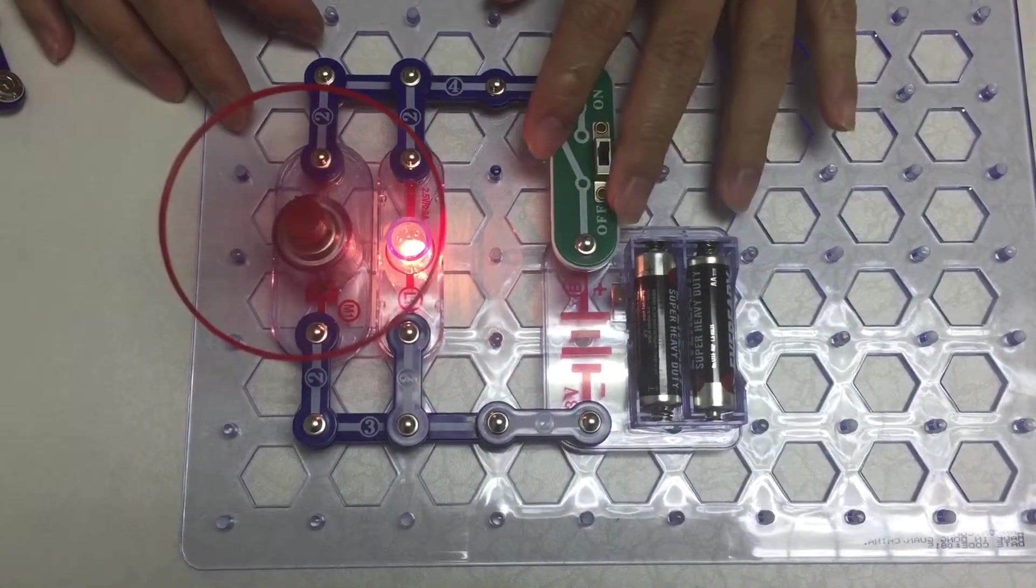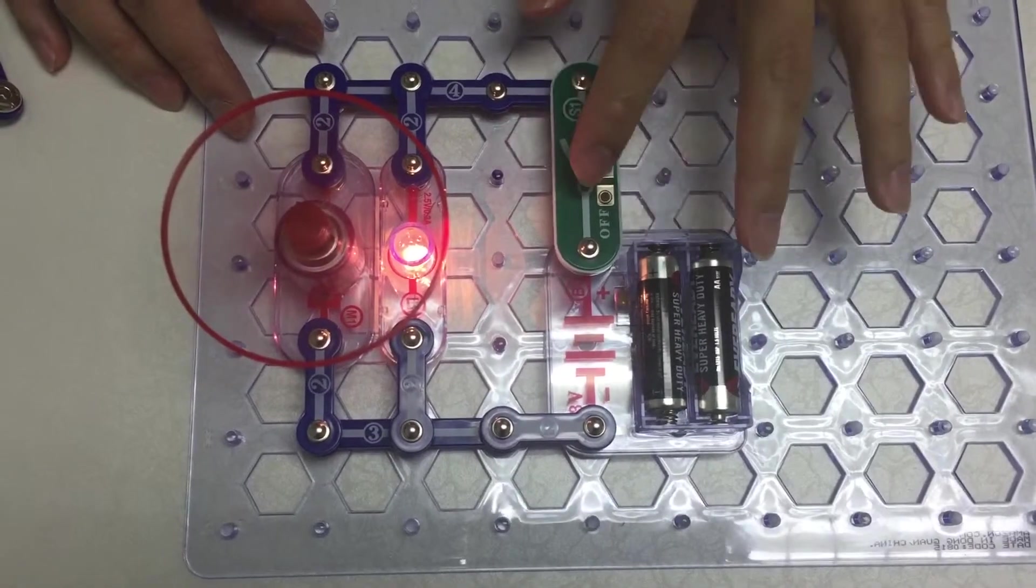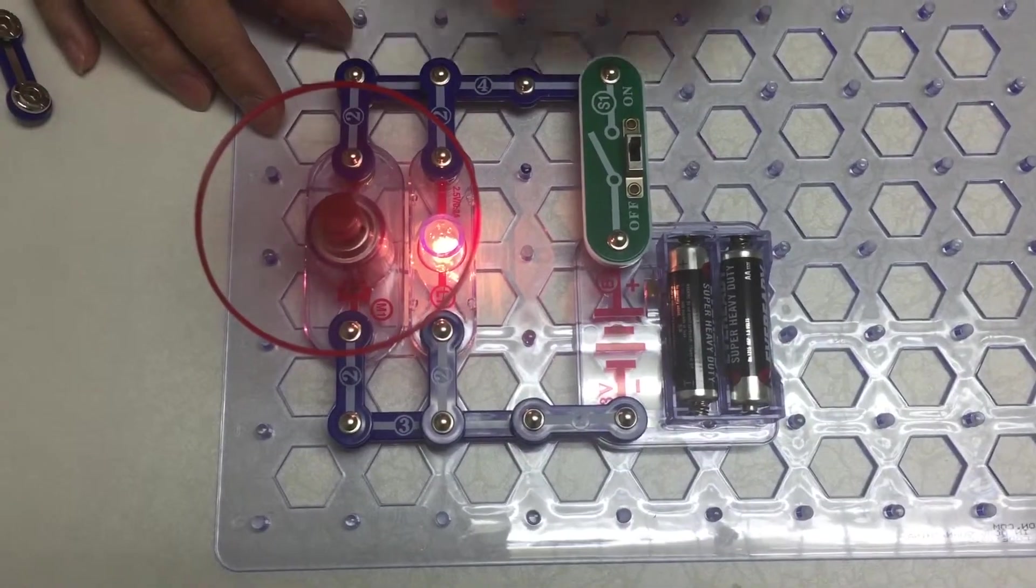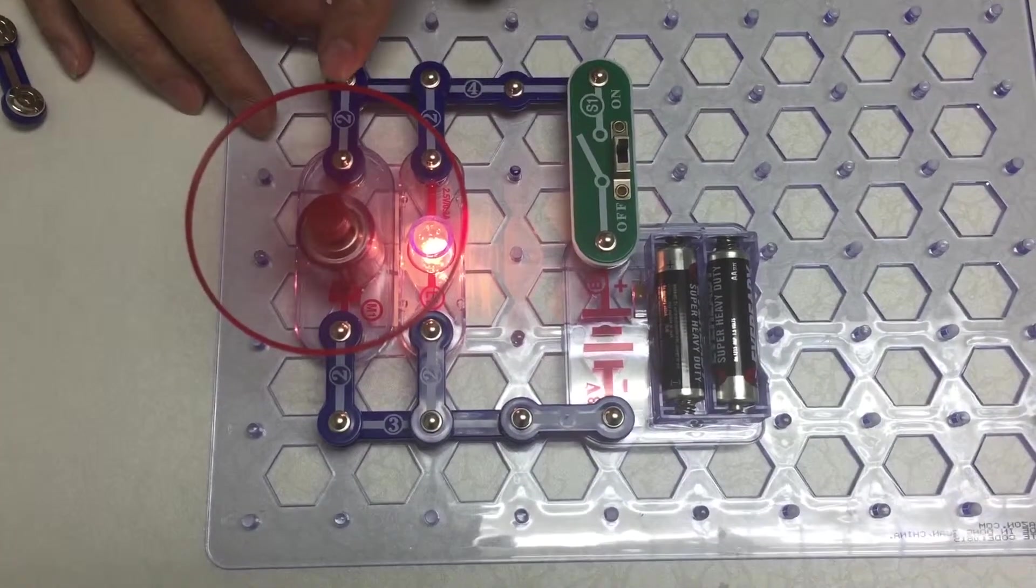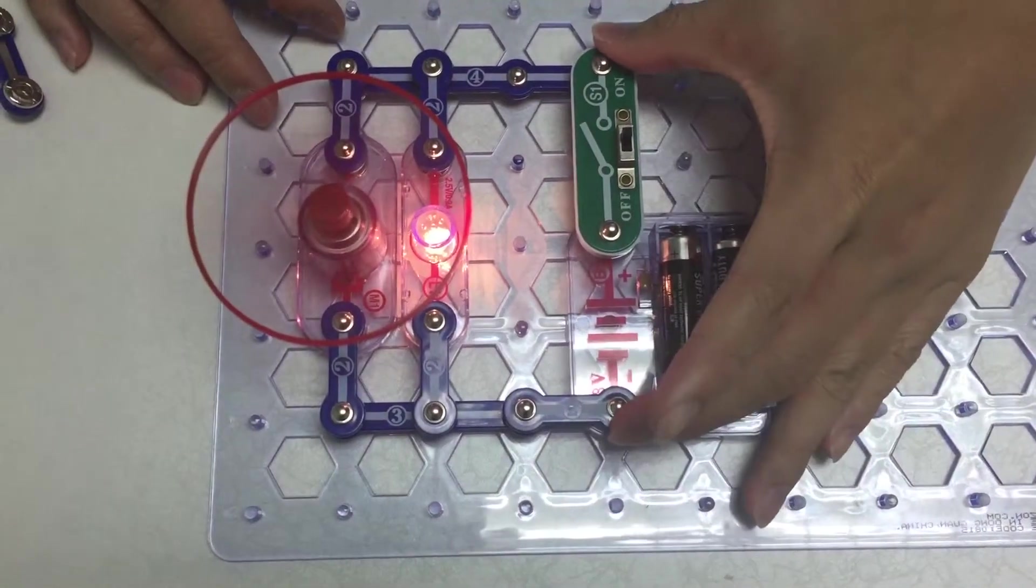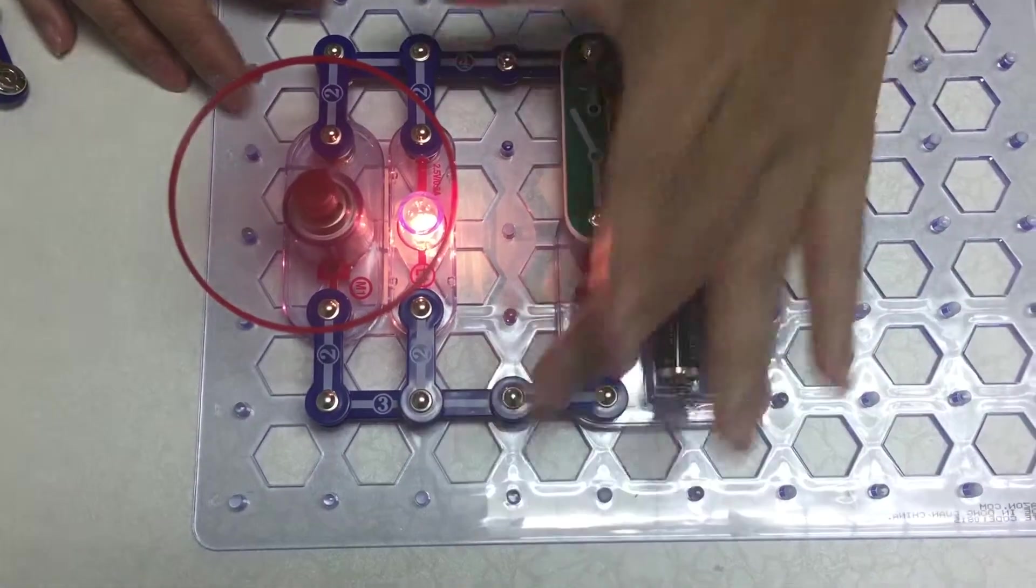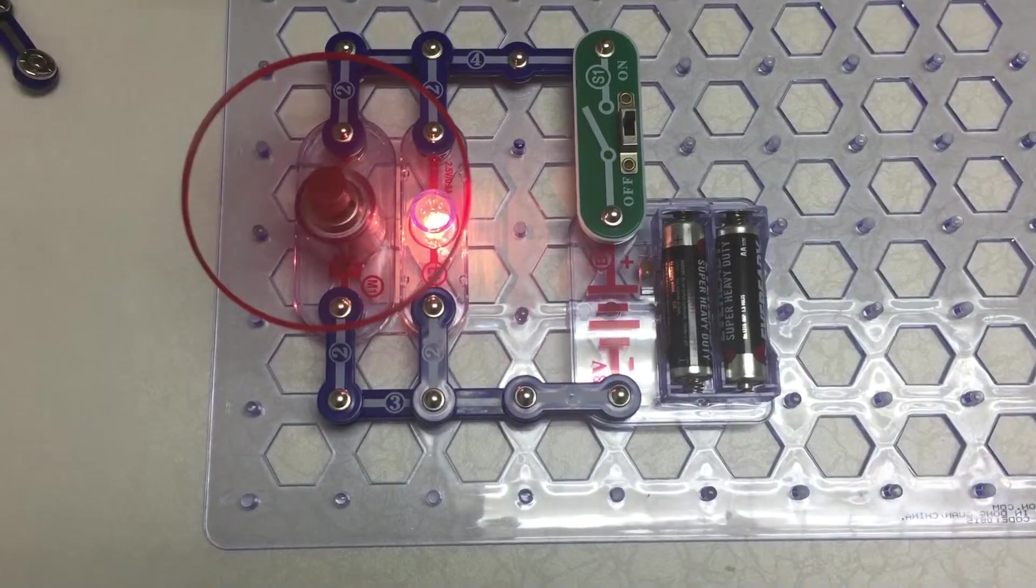In a parallel circuit, the voltage across parallel sections are the same. That means that the voltage here, and the voltage here, and the voltage here is the same.